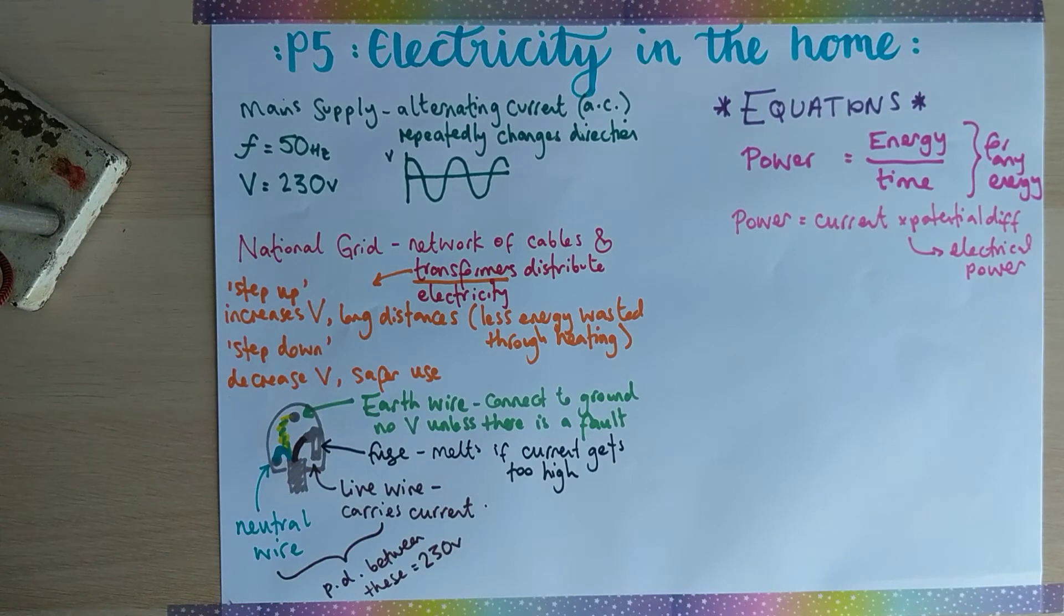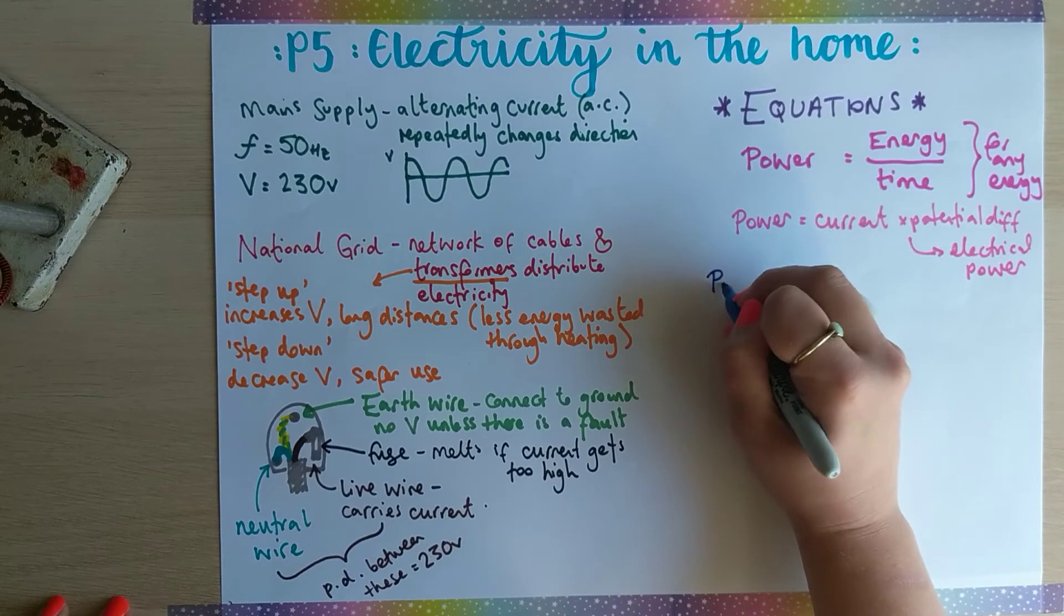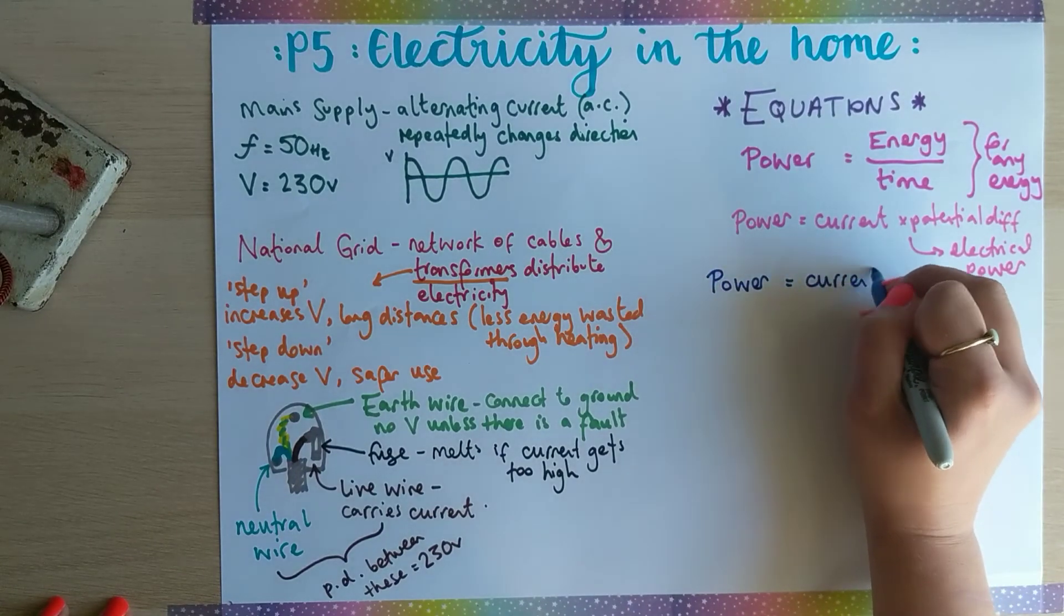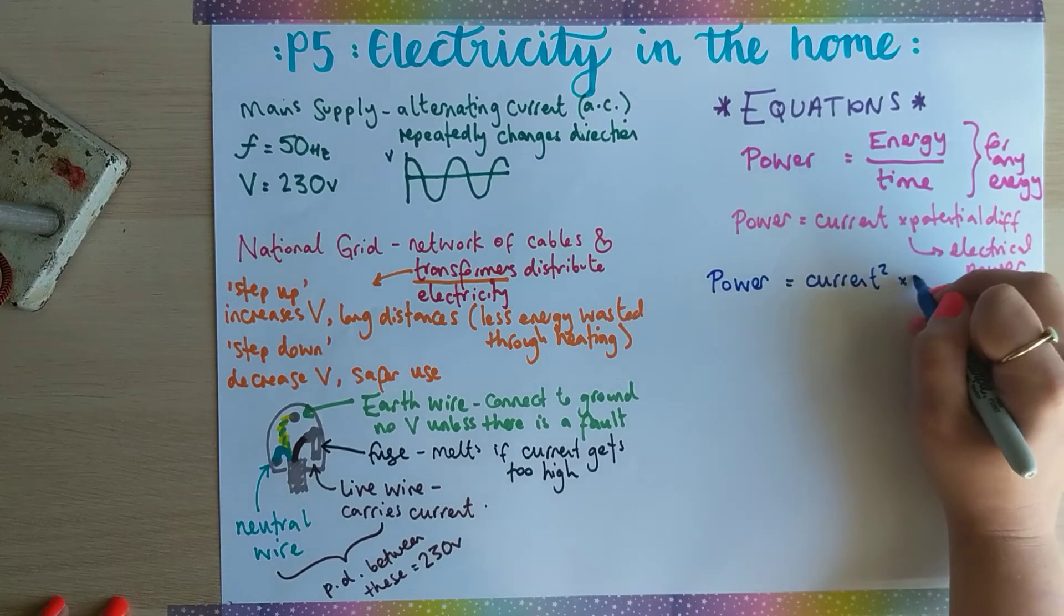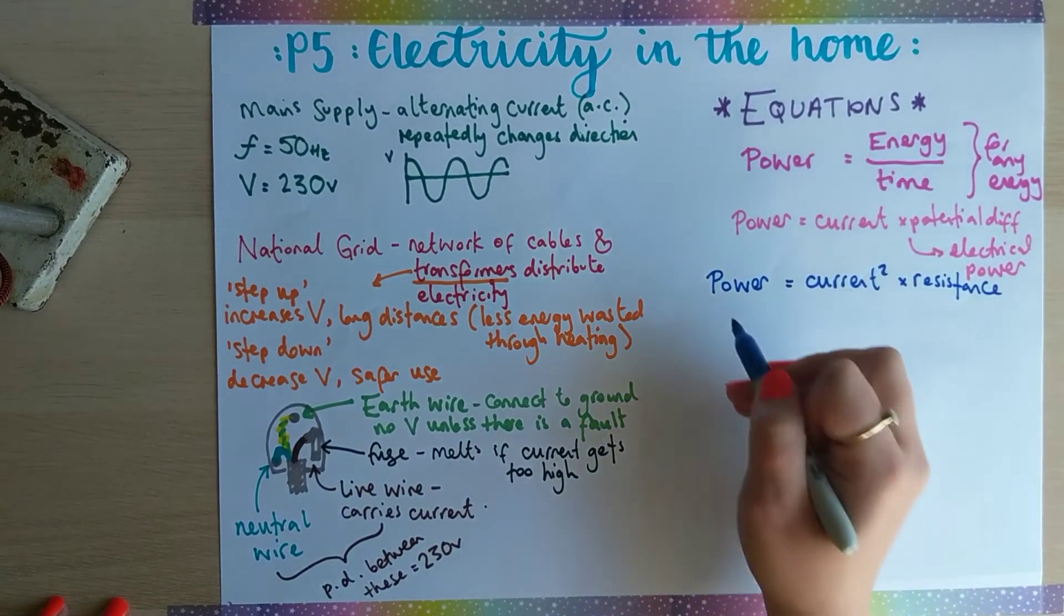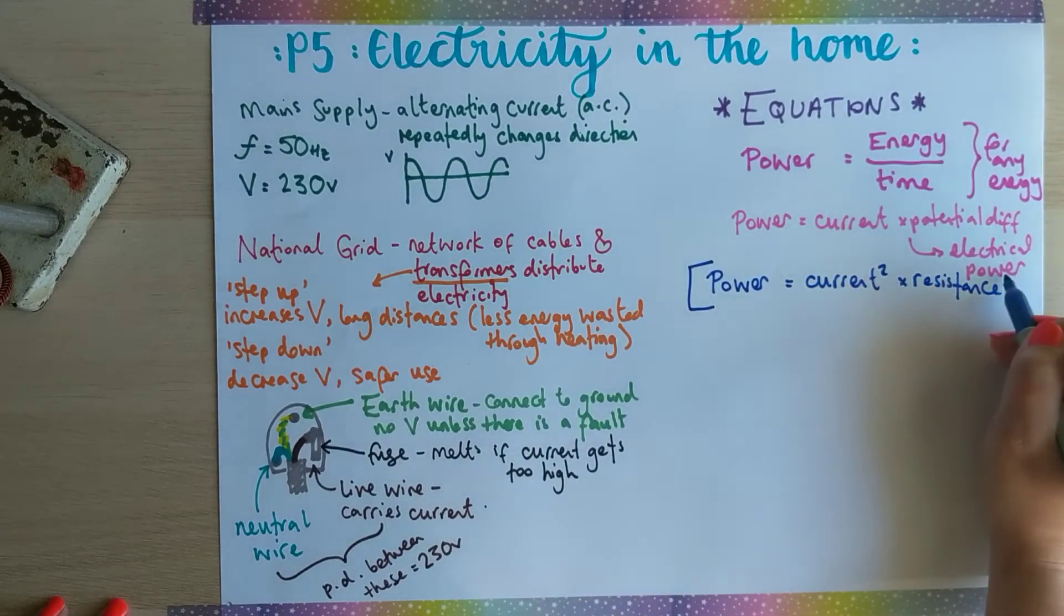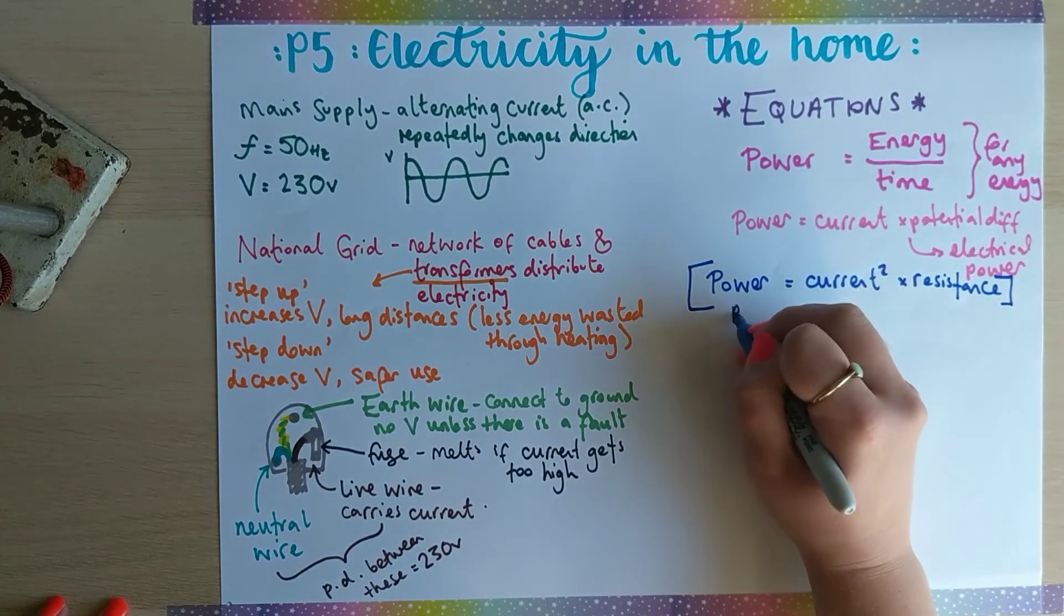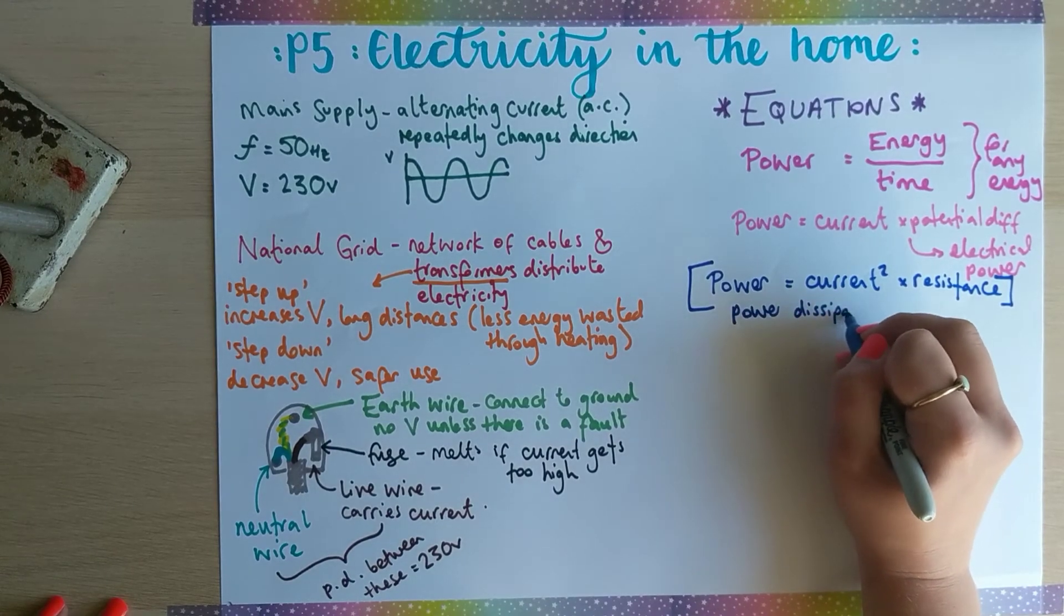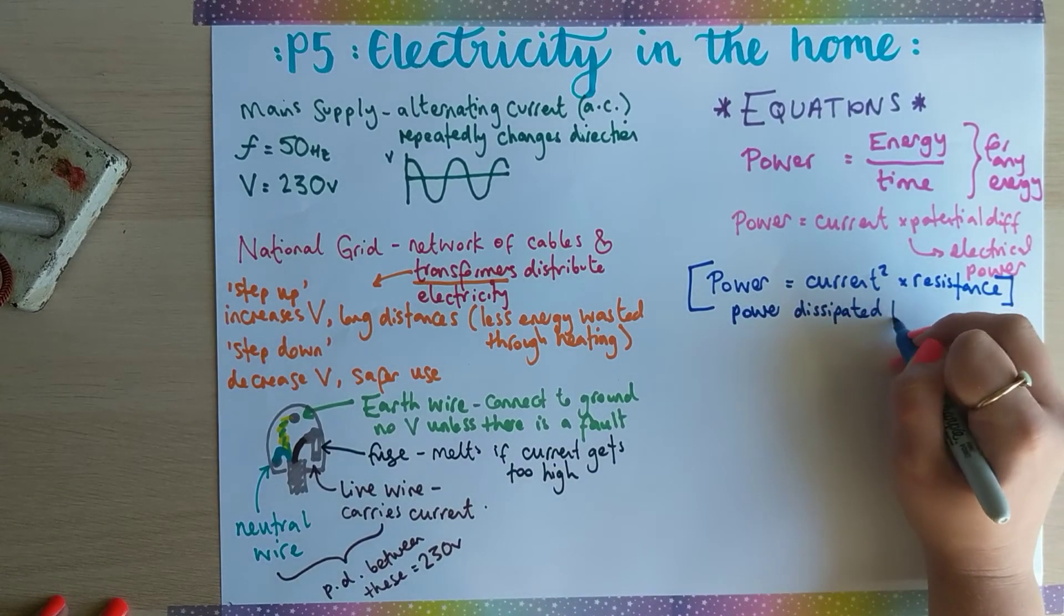The new equation for this topic is power equals current squared times resistance. This equation you need to learn, and this is for power that is dissipated—transferred to the surroundings through heating.